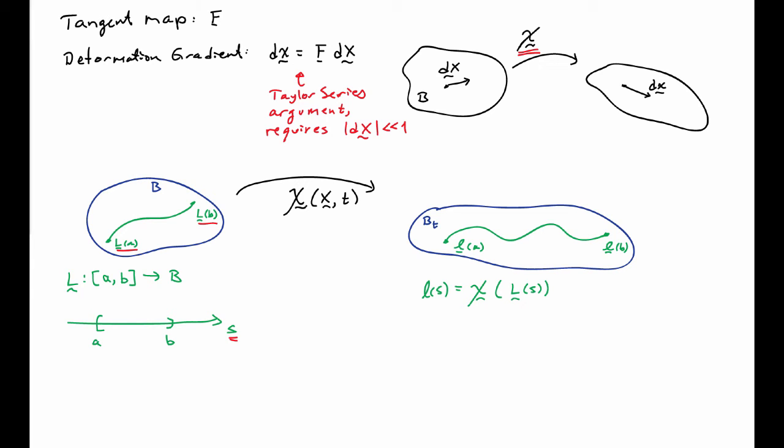Little L is a mapping from the interval A to B, but now into Bt. It's simply defined as chi, the deformation map, acting on big L. We get this nice relationship between big L and little L through the deformation map.